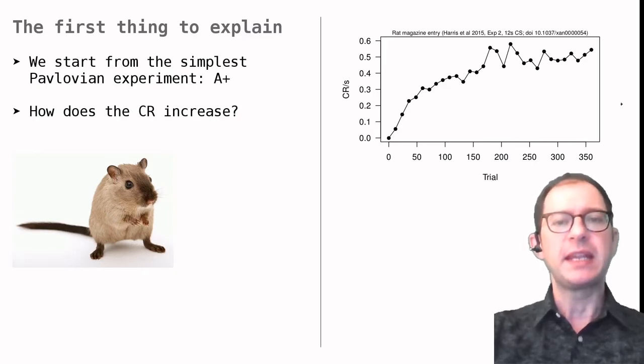As we can see from this data on rat magazine entry, learning is fast at the beginning, and then it slows down until eventually some maximum level of responding is reached. This is the pattern that we want to explain.